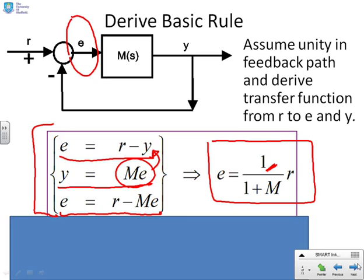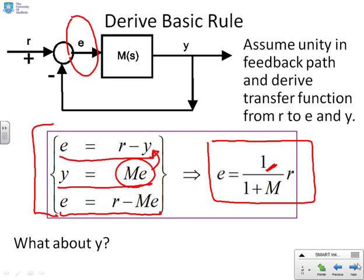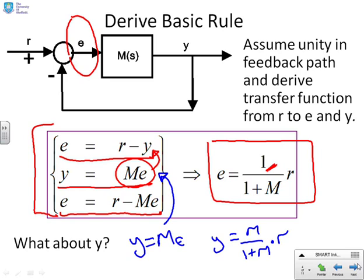For completeness, to find y: since y equals m times e, we can write y equals m over 1 plus m times r, simply by multiplying what we had for e.